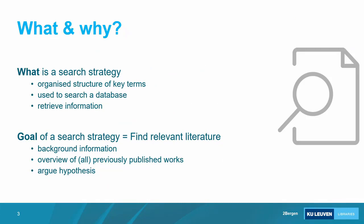What is the point? Why are we here today? First question: what is a search strategy? It's the principle of an organized structure of key terms used to search a database. Before the internet, researchers went to the library to search journals for articles. That long and exhausting process has been made easier with databases and other sources of literature online. We'll focus mainly on finding literature online through databases.